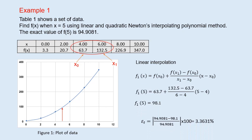Substitute the relevant data in the function, we obtain the result as 98.1. The comparison between the real value and the approximate value gives us the true error of 3.3631%.